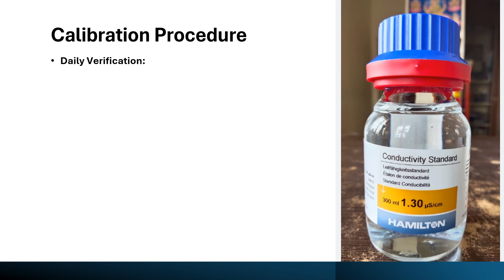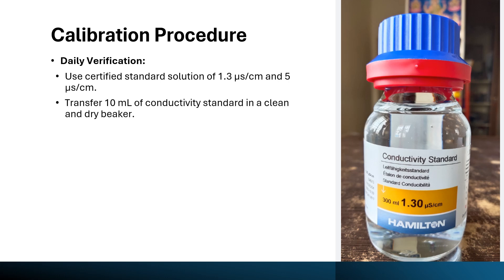First is daily verification. Prior to use of the conductivity meter, daily verification should be performed — this ensures the accuracy and reliability of your reading. Commercially available standard solutions of 1.3 microsiemens per centimeter and 5 microsiemens per centimeter can be used for daily verification. For daily verification, transfer 10 ml of conductivity standard solution of 1.3 microsiemens per centimeter into a clean and dry beaker.